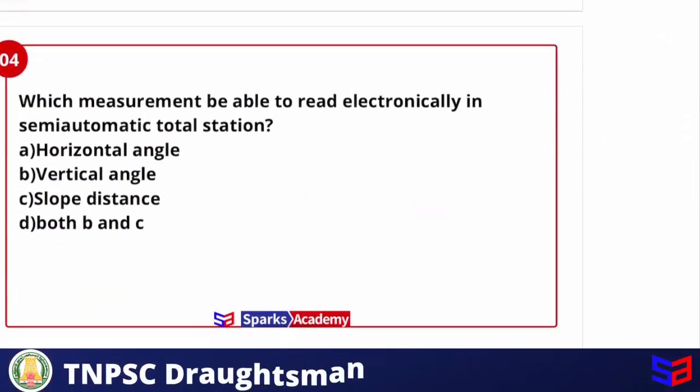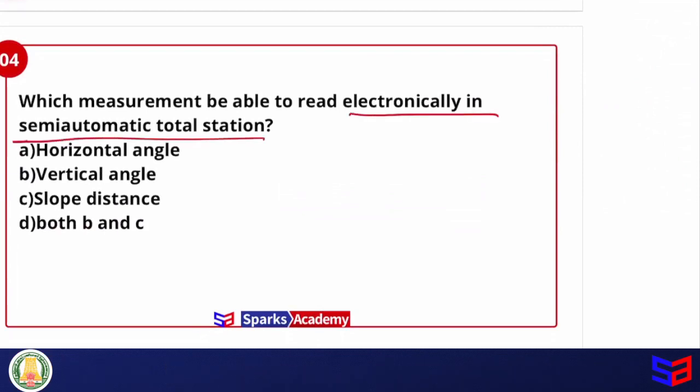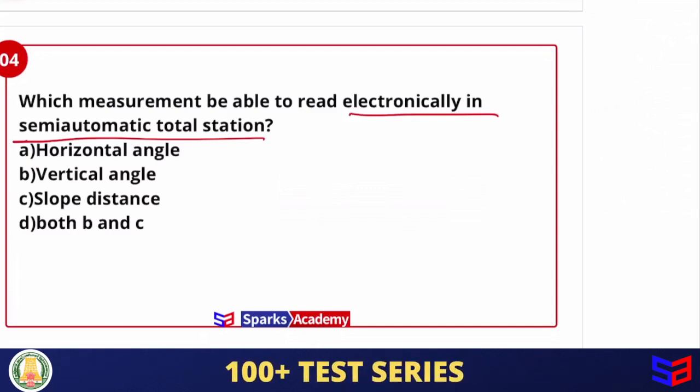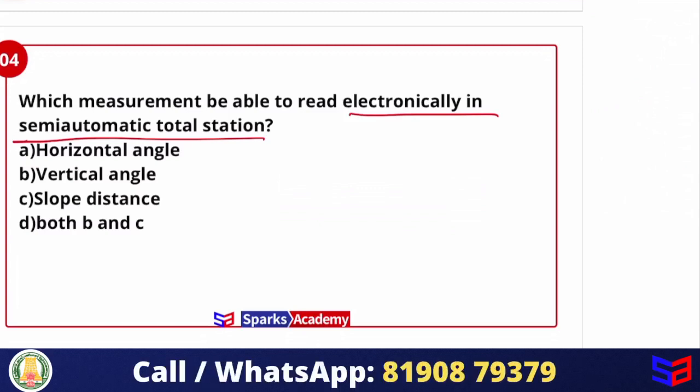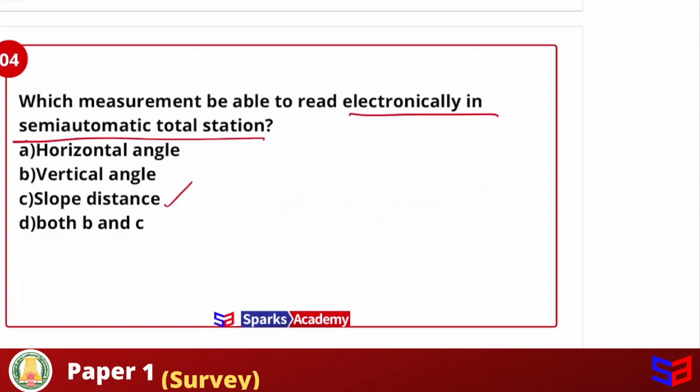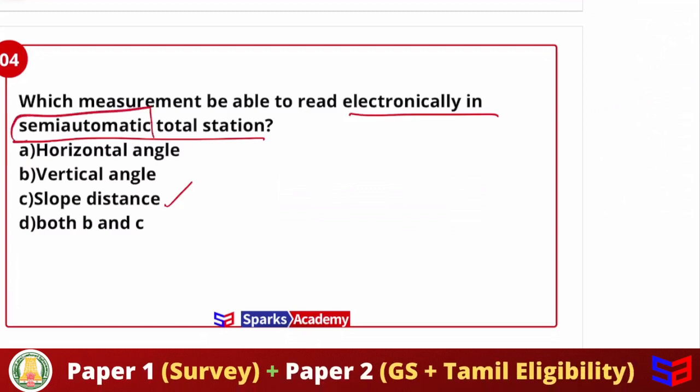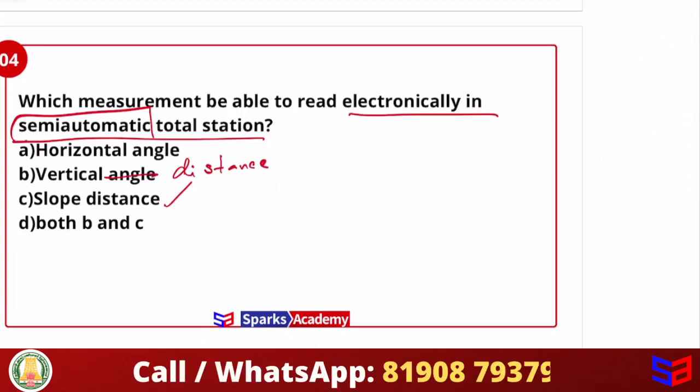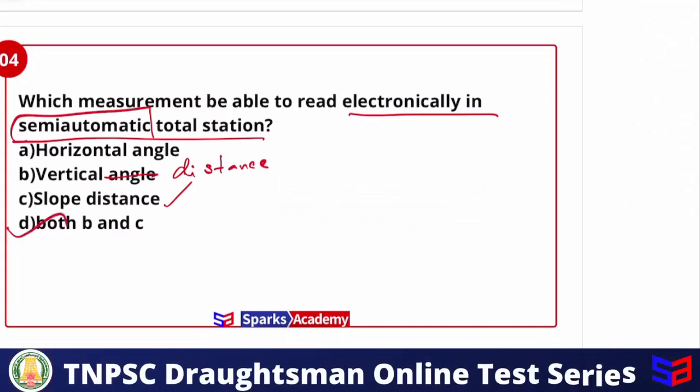Next, which instrument is able to read electronically in semi-automatic auto registration? Now I have already explained, like automatic or semi-automatic, then manual, electronic or manual, distance measure. For example, first manual instrument, both horizontal distance and vertical distance measured manually. The answer is option D, both B and C.